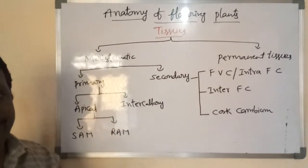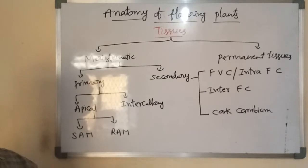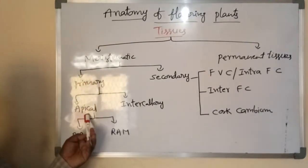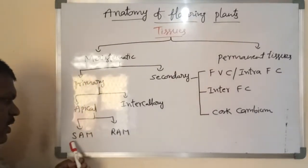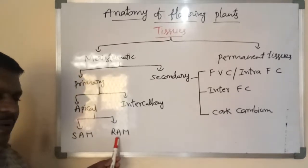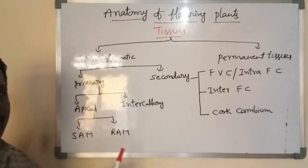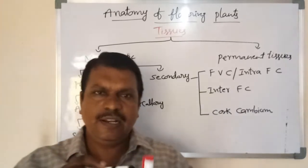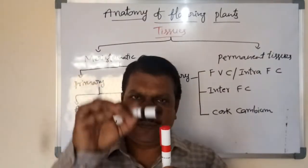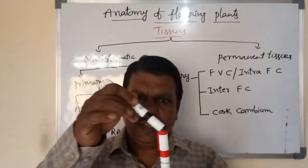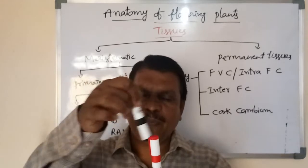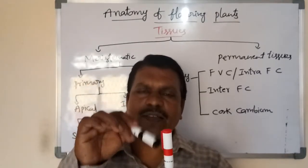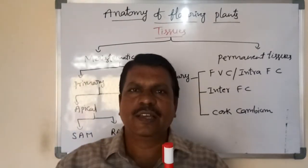Intercalary meristem. Before that — apical meristems are of two kinds: shoot apical meristem and root apical meristem. Shoot apical meristem plays a crucial role in growth of the stem lengthwise, because the tip of the shoot contains shoot apical meristem. Those cells divide mitotically and generate new cells, hence the stem grows towards aerial regions over several meters of height.